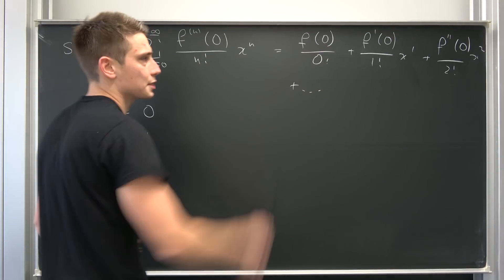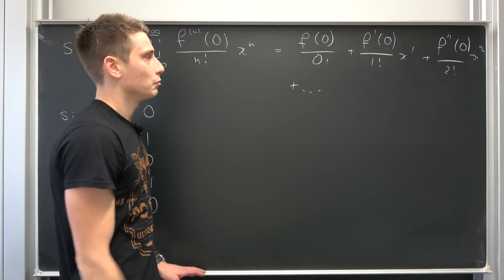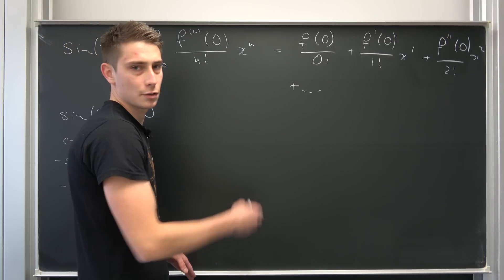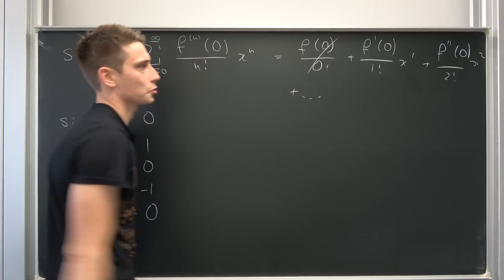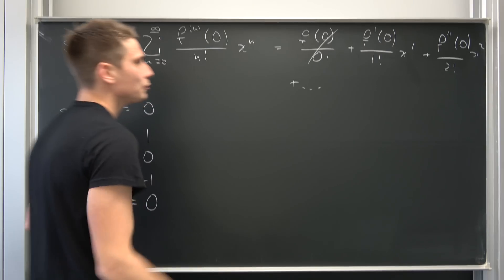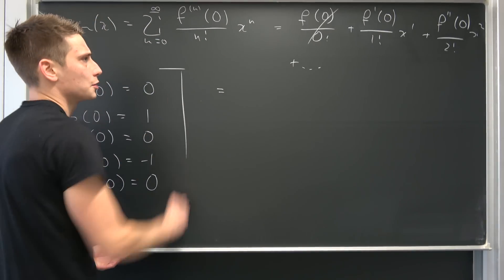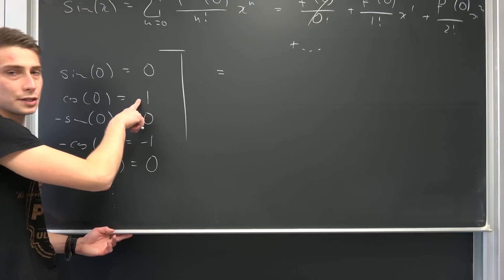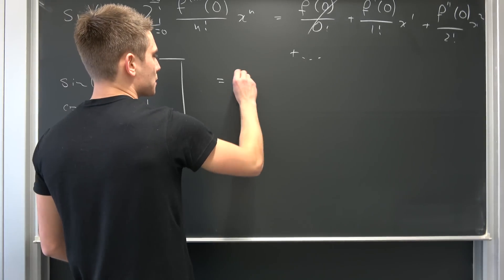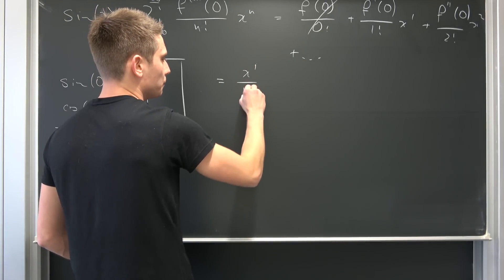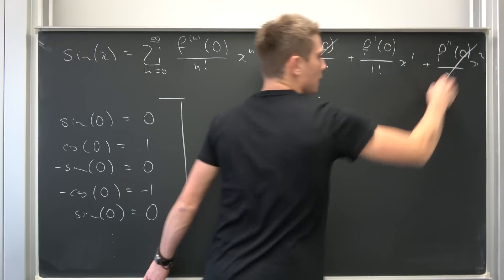Why not plug all the values into here? So you see on the zero derivative, the function itself evaluated at zero, this is just going to vanish. On the first derivative at zero, it's just going to be one over one factorial times x to the first power. Let's put it that way. This term is going to vanish.